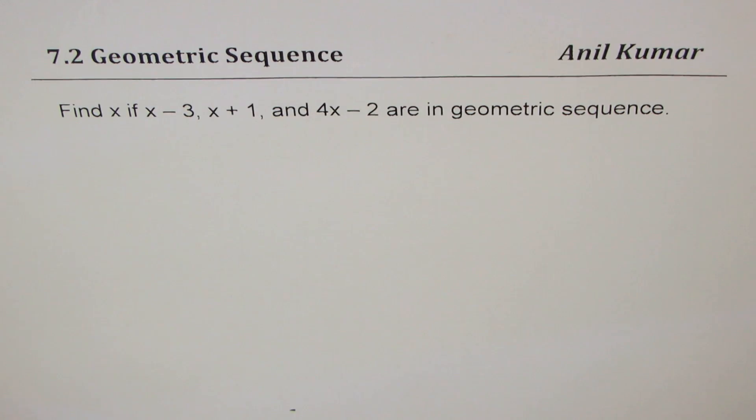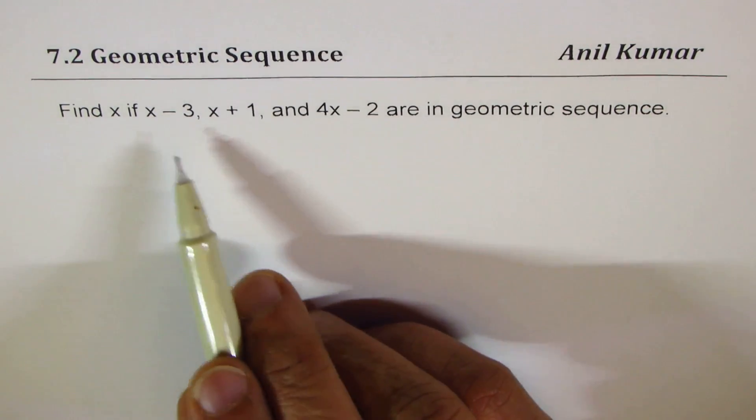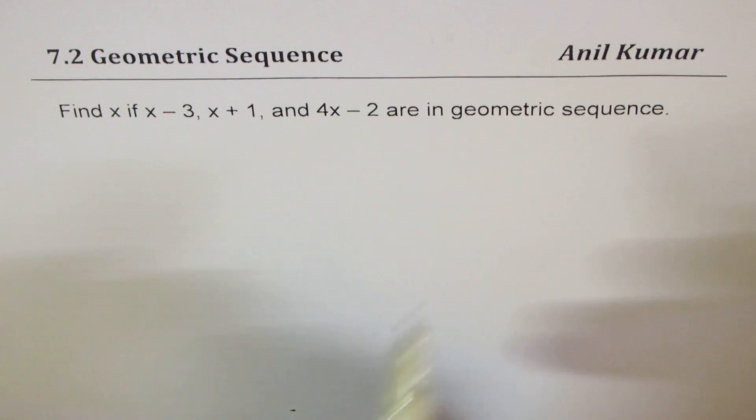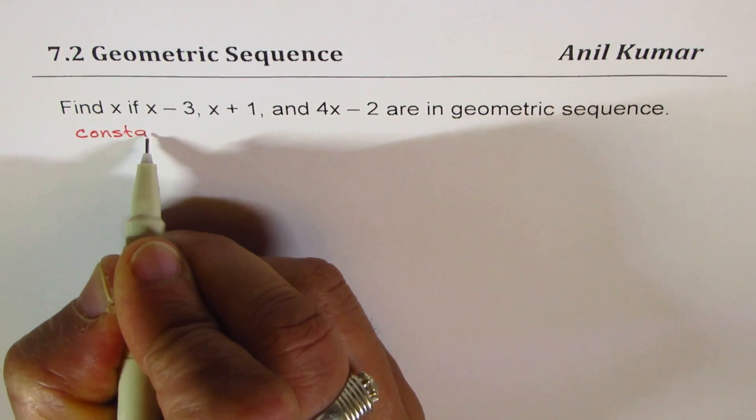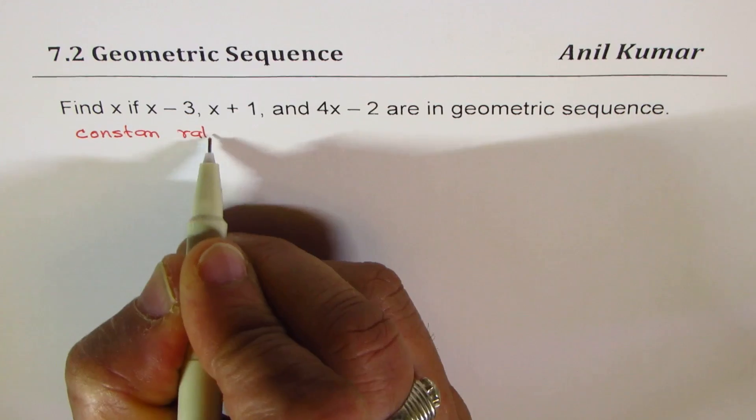You can always pause the video, answer the question, and then look into my suggestions. Now when three terms are in geometric sequence, it means they have a constant ratio.